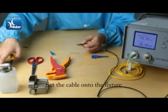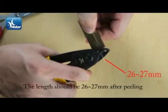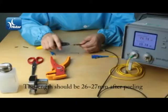Set the cable onto the fixture. Peel the cable using miller clamp. The length should be 26 to 27 mm after peeling.